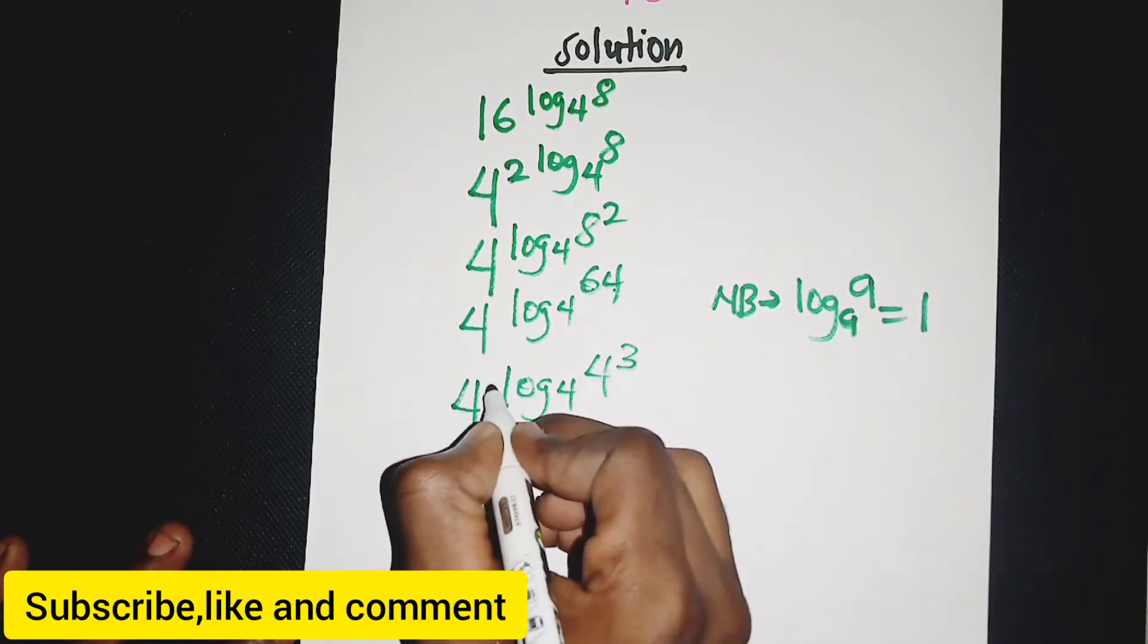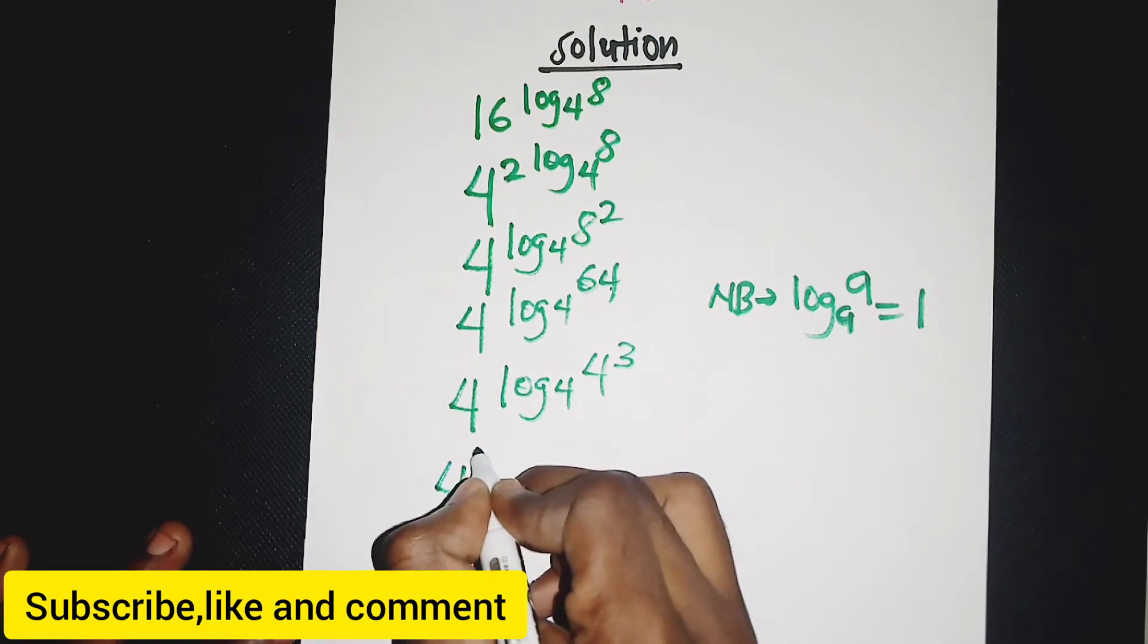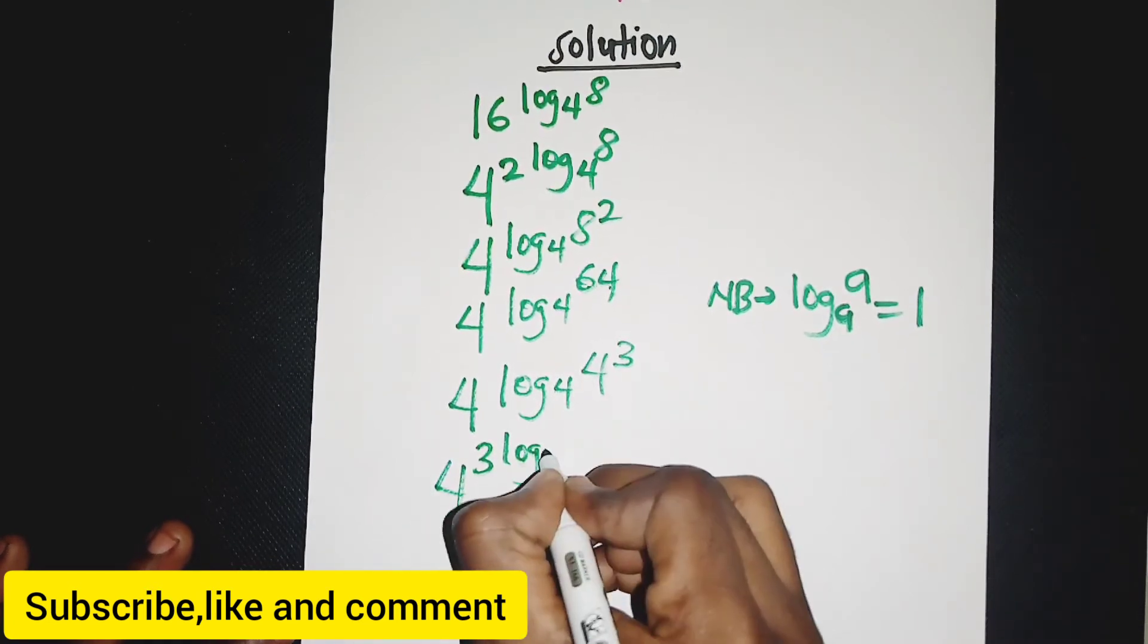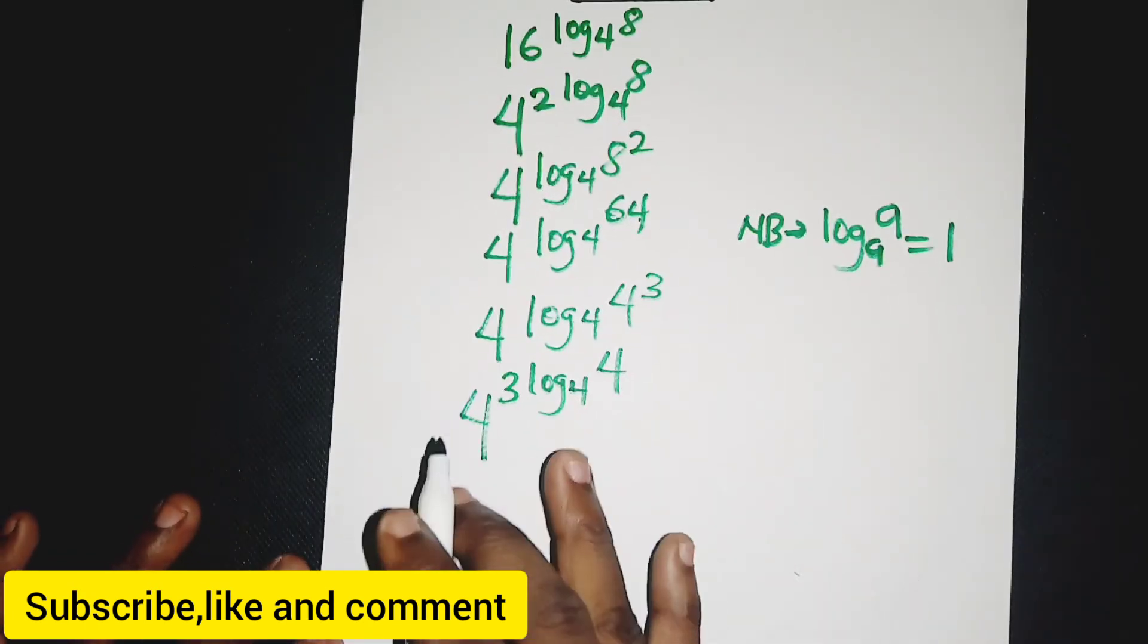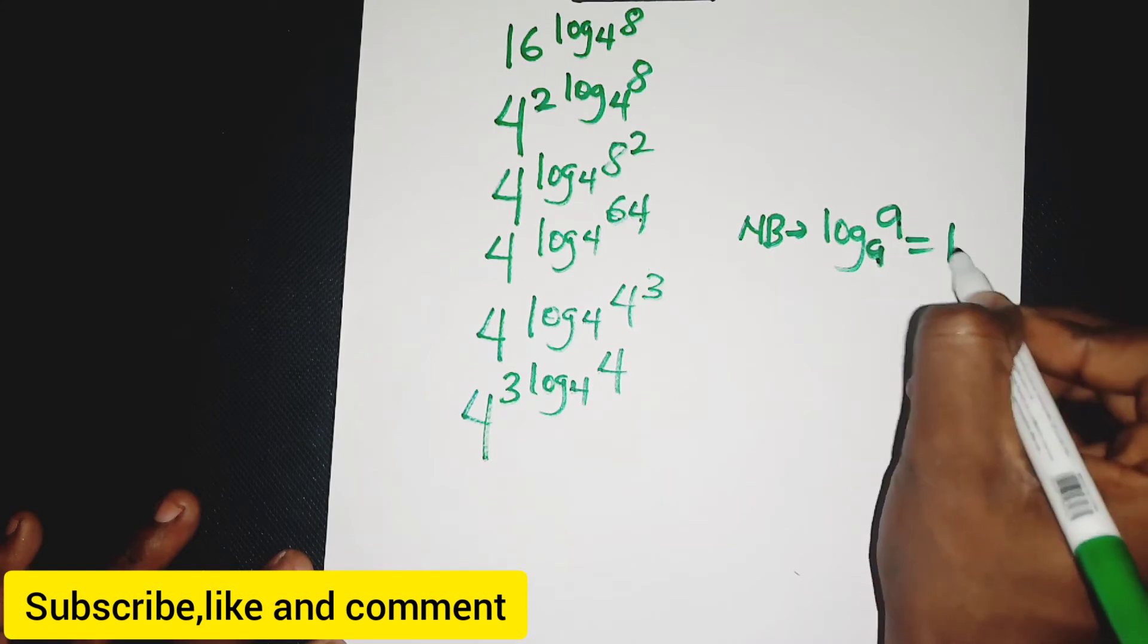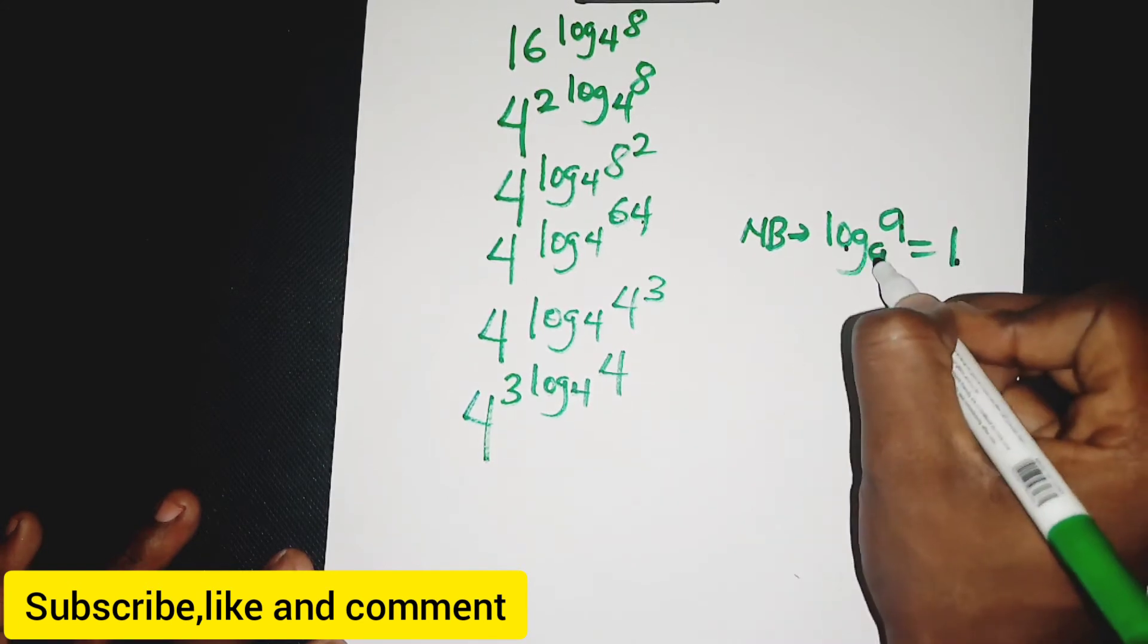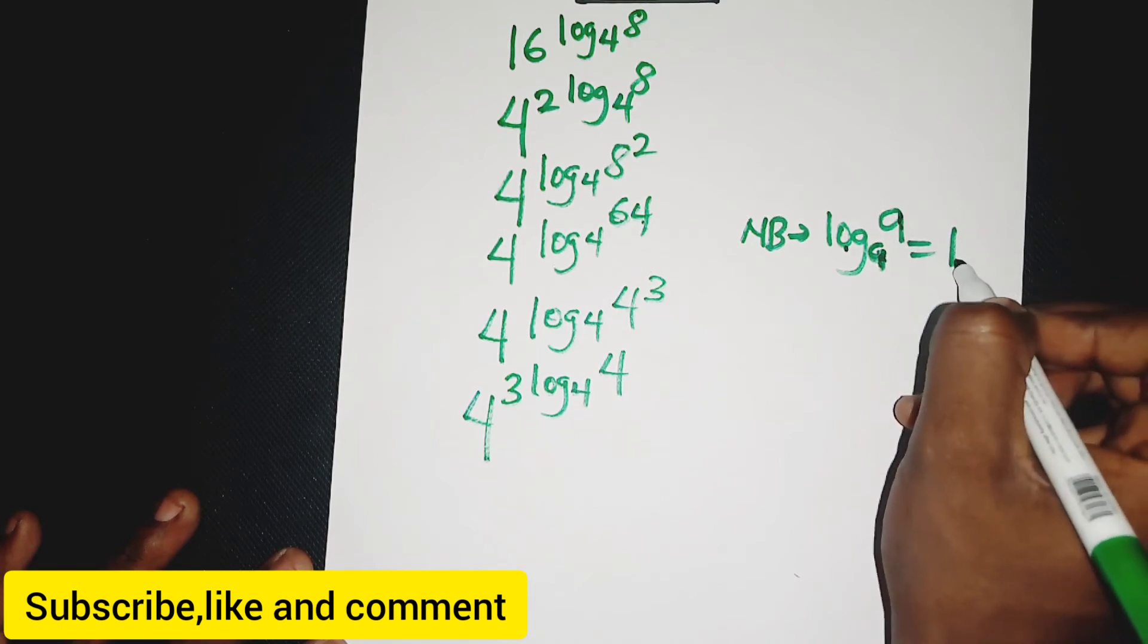From here, we send it way back to the back here, so we have 4 to the 3 log base 4 of 4. We have this property which is equal to 1 when the base is the same as the argument.